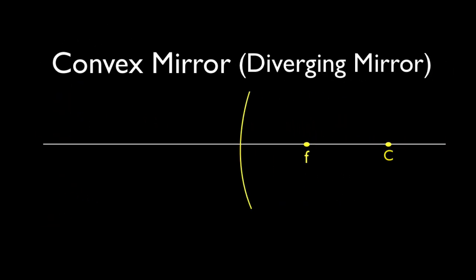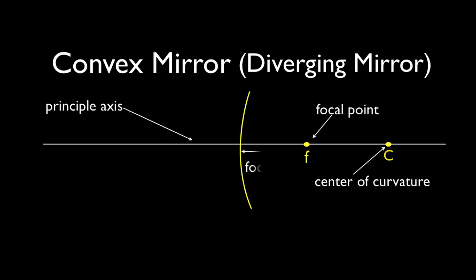Now let's do the convex mirror. We have the principal axis, the center of curvature, and the focal point. The focal length is one half the center of curvature. This is a convex mirror — a diverging mirror. The left side is the shiny side. The focal point and the center of curvature are behind the mirror. It's a spherical mirror; C is the center, F is the focal point halfway between the center of curvature and the mirror. The focal length is the radius divided by two.